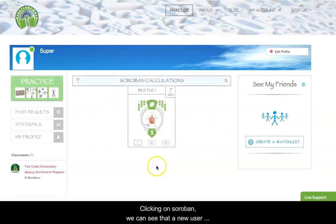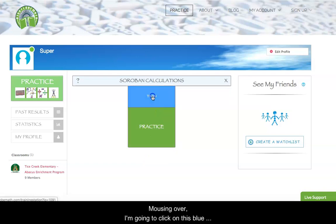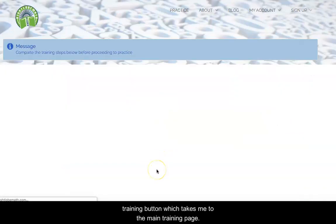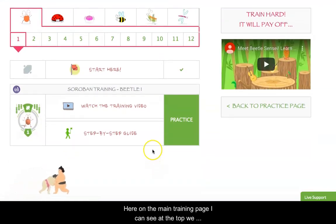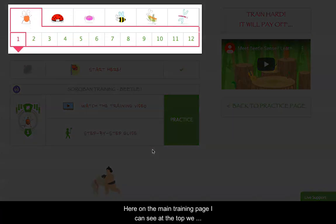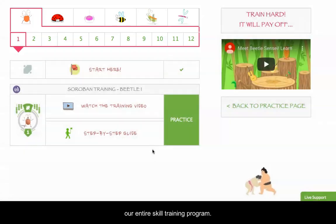So clicking on Soroban, we can see that a new user will start their training on the Beetle 1 level, and we ask students to train their skill first and then practice. So I'm going to click on this blue training button, which takes me to the main training page. Here on the main training page I can see at the top we have a roadmap that shows our entire skill training program.